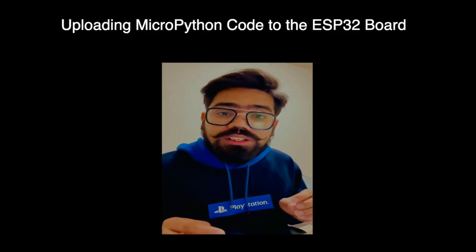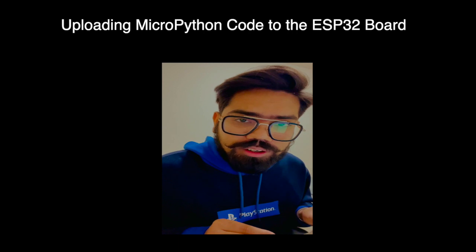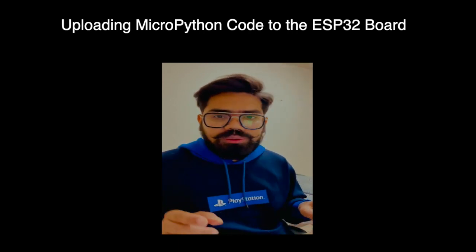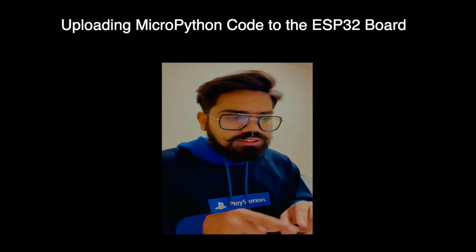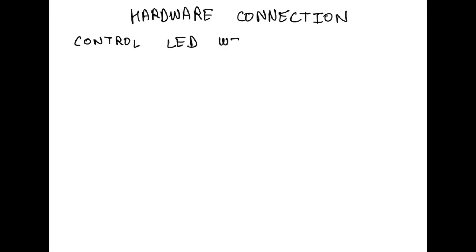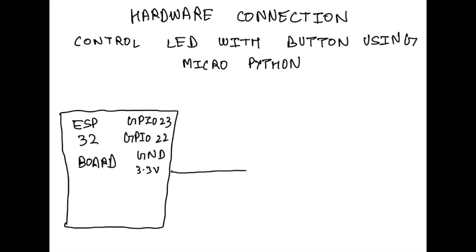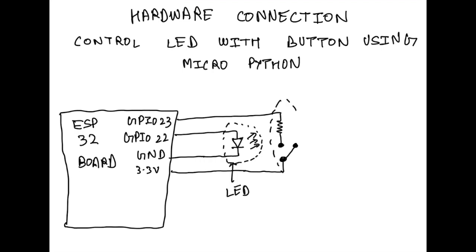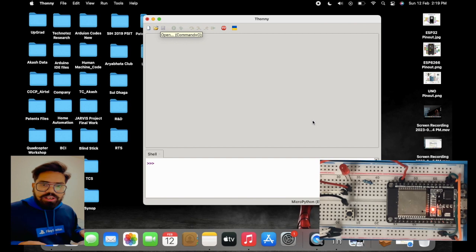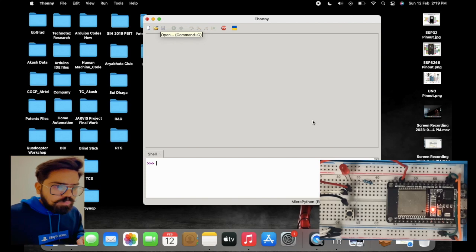Now we can upload a piece of code into the microcontroller. For that, first we need to do a hardware connection — see the hardware layout. After connecting the buttons and the LEDs with that particular hardware connection, we are good to go for writing the code.